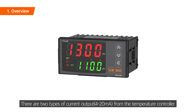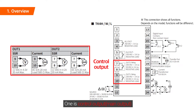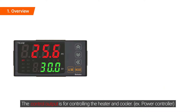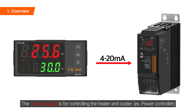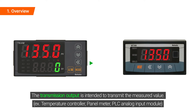There are two types of current output from the temperature controller. One is the control output, and the other is the transmission output. The control output is for controlling the heater and cooler, while the transmission output is intended to transmit the measured value.